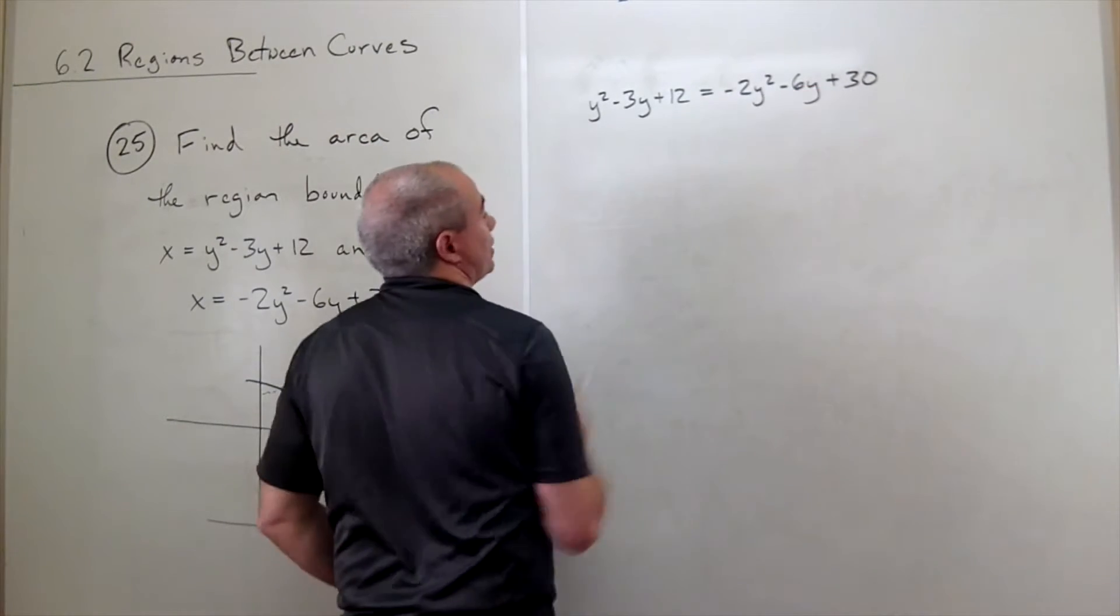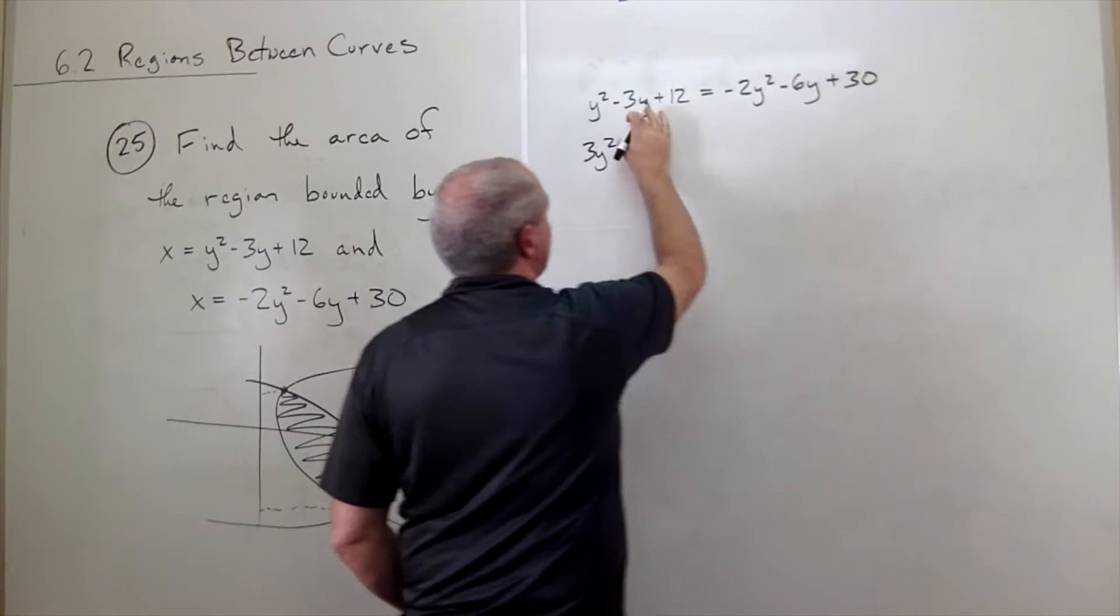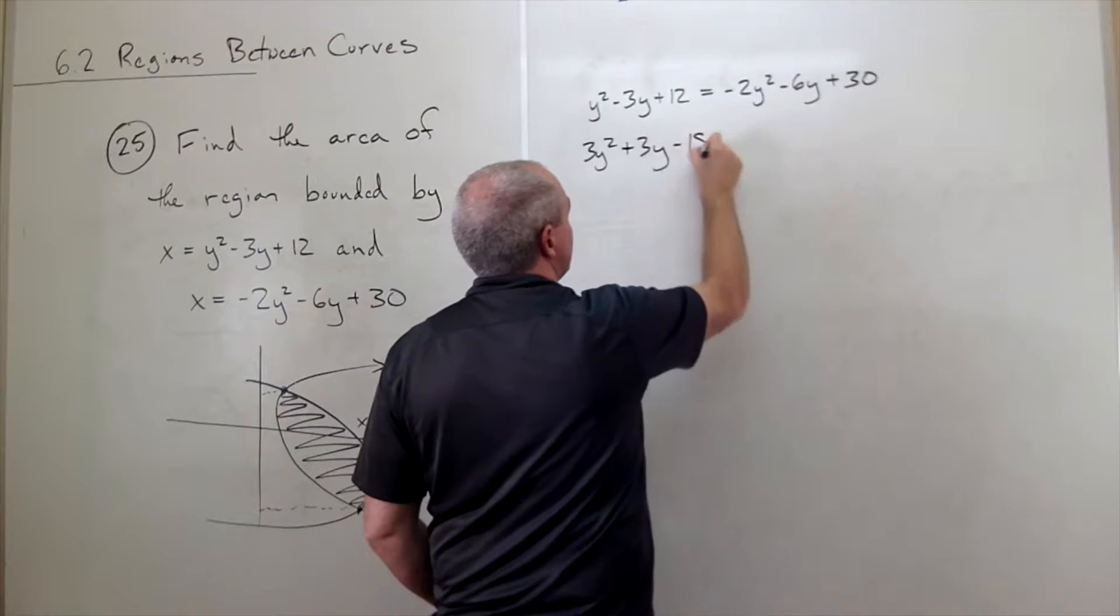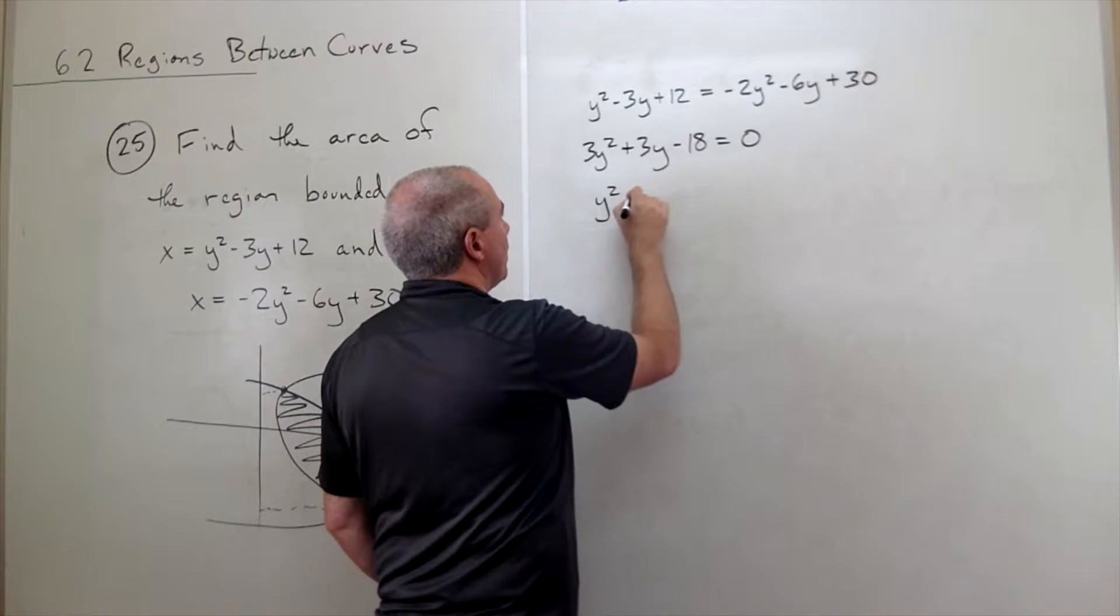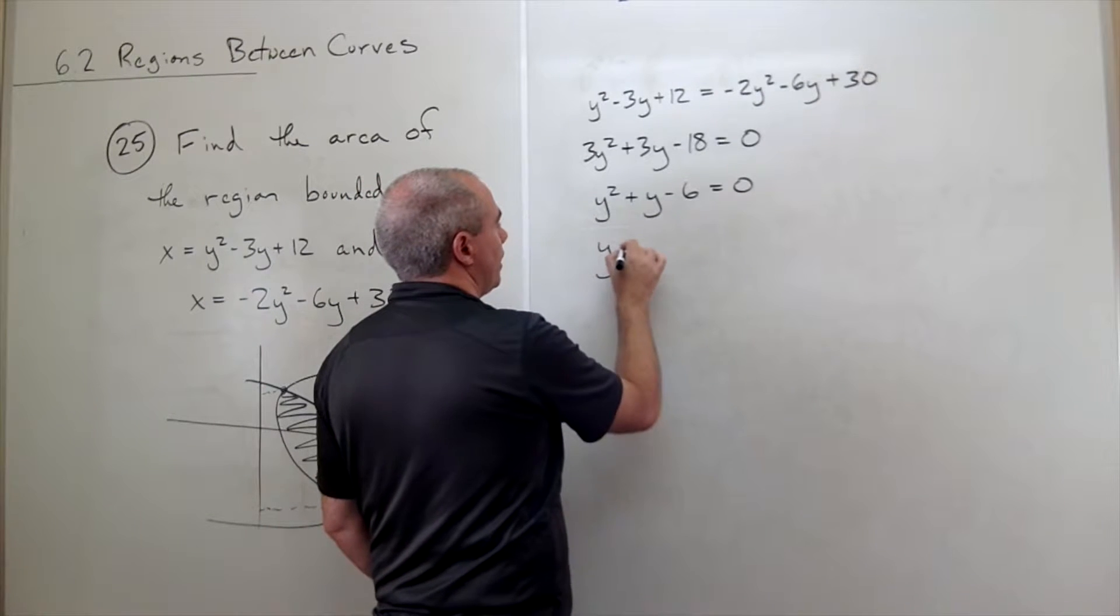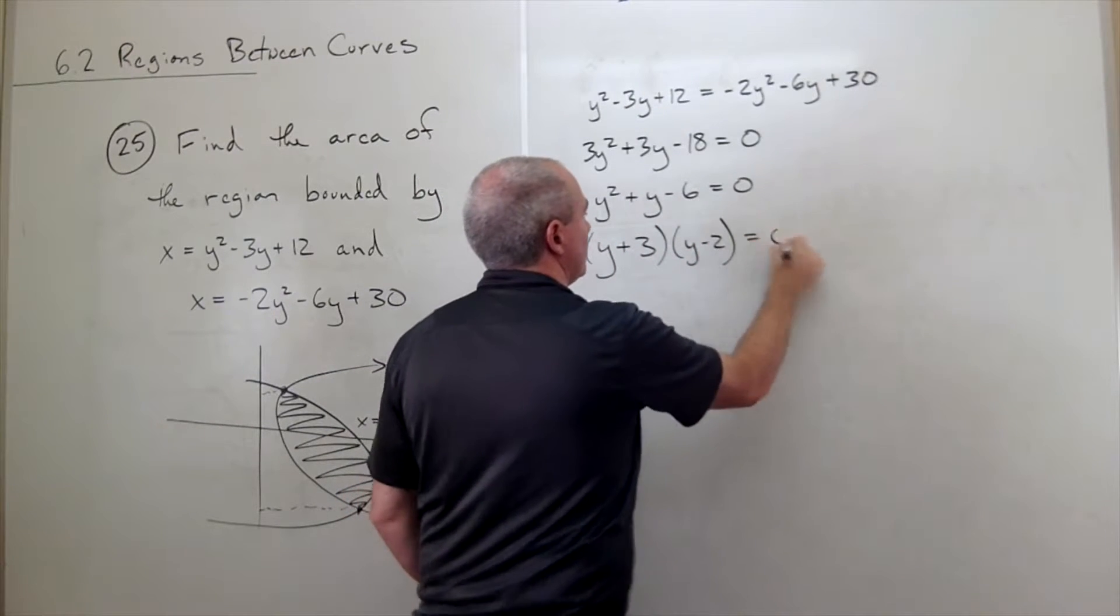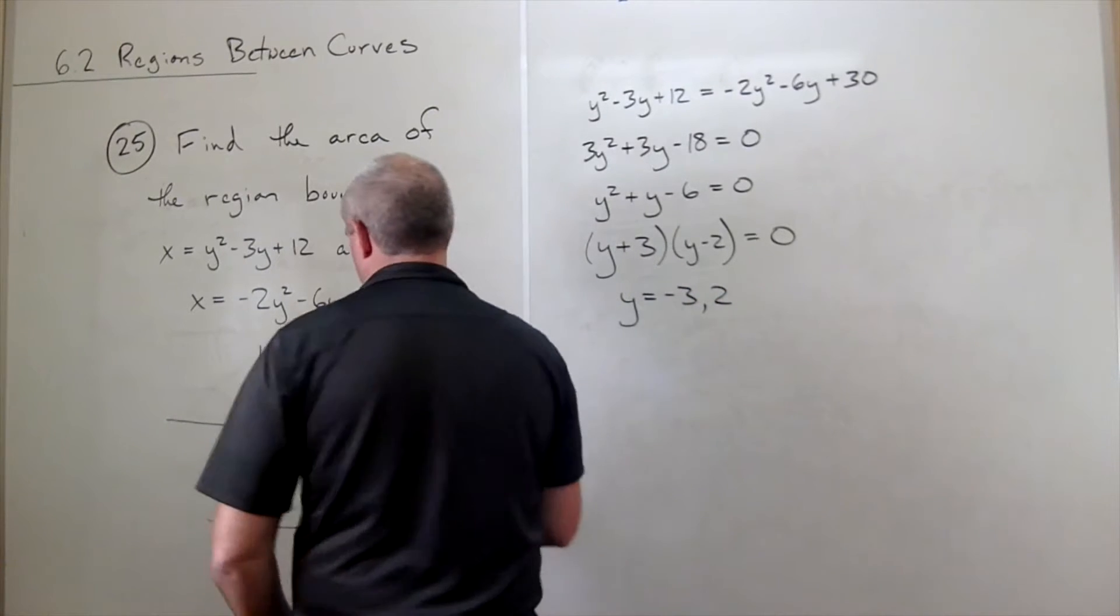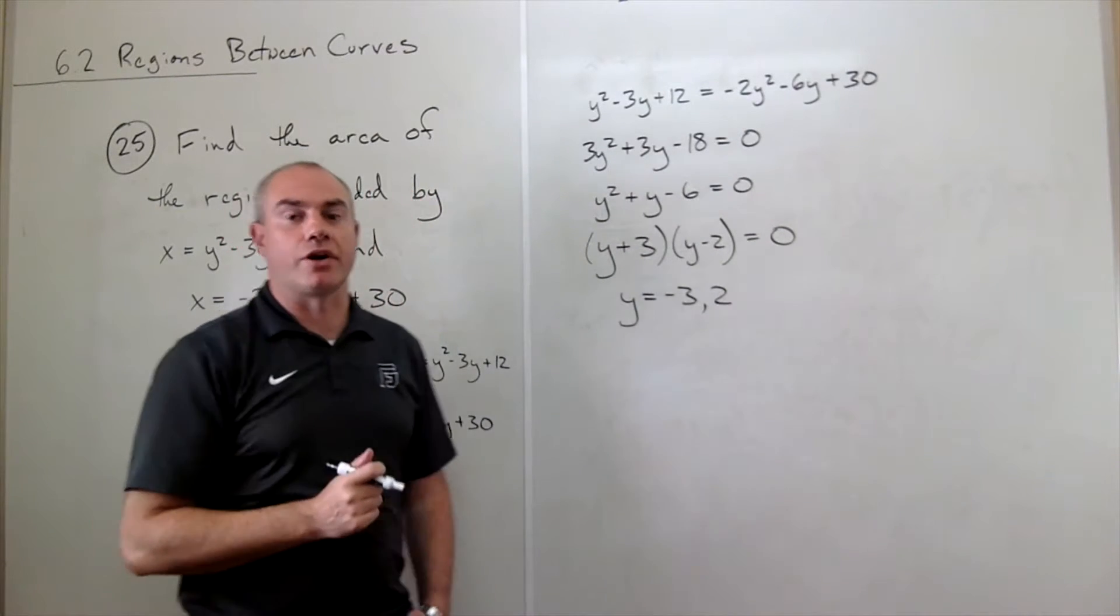If I move all of this stuff to one side, I get a nice quadratic equation, so I get 3y squared plus 3y minus 18 equals 0. I could divide both sides by 3. If I do, I get y squared plus y minus 6 equals 0. And now this factors down to y plus 3 times y minus 2 equals 0. And so what I end up with is that y would either be negative 3 or positive 2. So this is 2, this is minus 3, and now we have our limits of our integration.